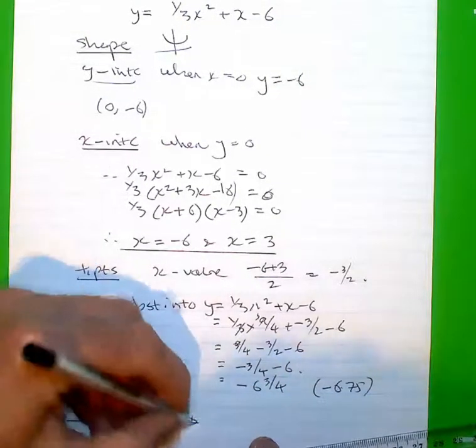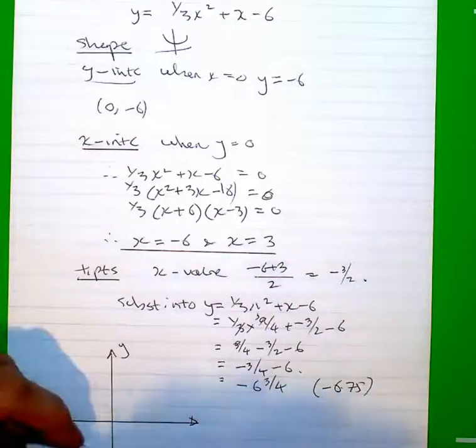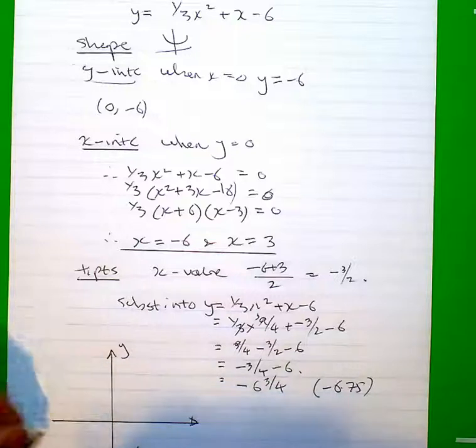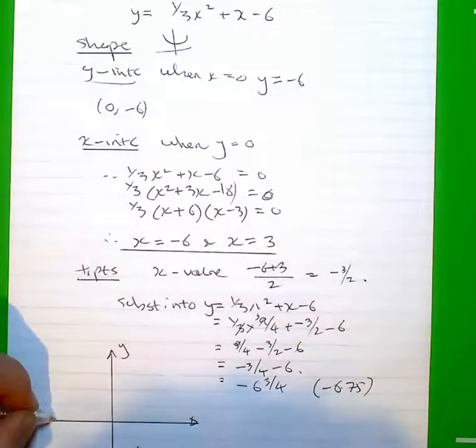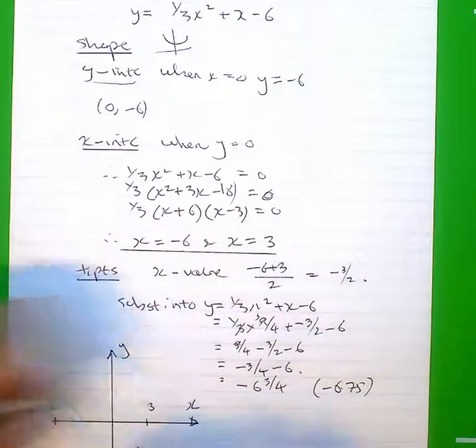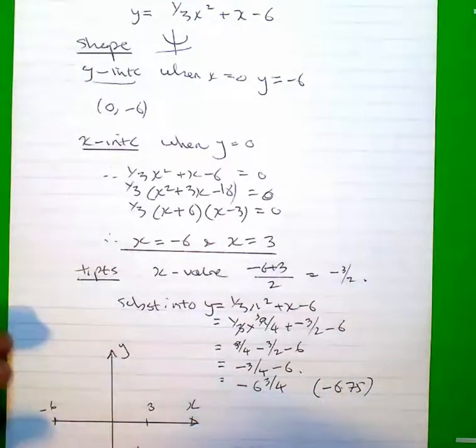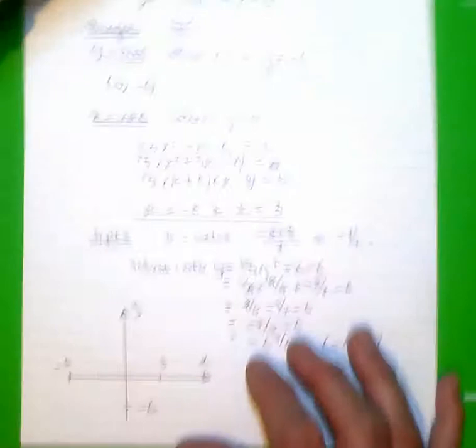And when I sketch the graph, it only has to be approximate. My Y-intercept of negative six goes there. We've got negative six here, three here to label the X axis.